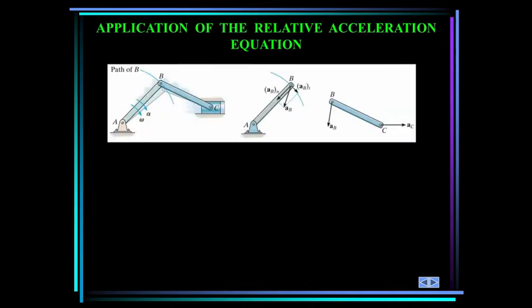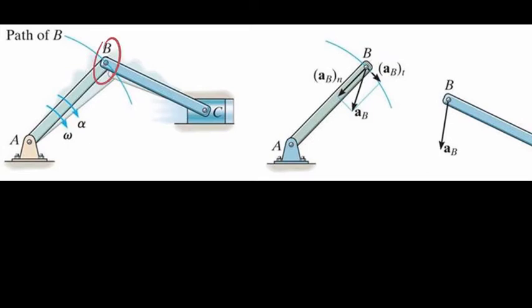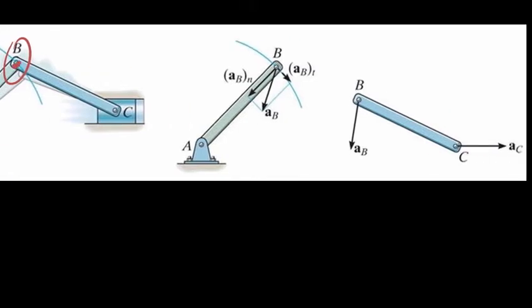In applying the relative acceleration equation, the two points used in the analysis A and B should generally be selected as points which have known motion, such as pin connections with other bodies. In this mechanism, point B is known to travel in a circular path about A, so the acceleration of B can be expressed in terms of its normal and tangential components. The normal acceleration of B would be alpha times the length of AB. Note that point B is common to both links AB and BC, so the acceleration of B is the same on both links. Point C connects link BC and the piston and moves along a straight line path, so the acceleration of C is directed horizontally.